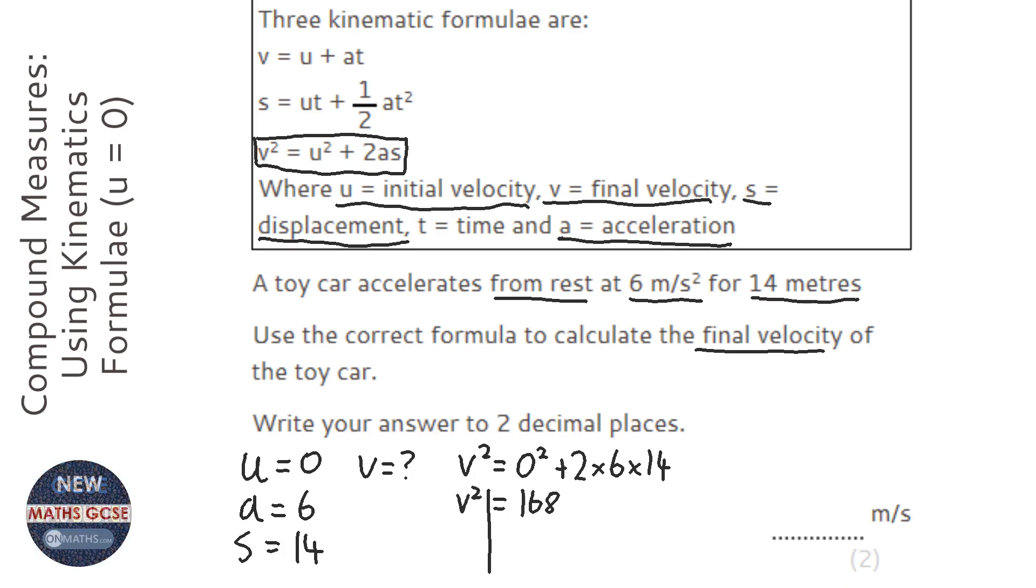So V squared equals 168, and we're going to square root both sides, so V equals square root of 168. So I'm going to type in square root 168 equals, and I'll get it as a decimal, because it says two decimal places, and the answer it gives me is 12.9614814. So to two decimal places, it's 12.96.